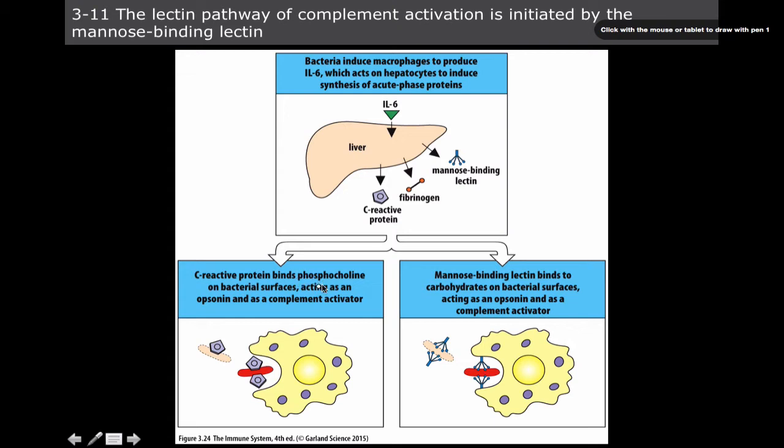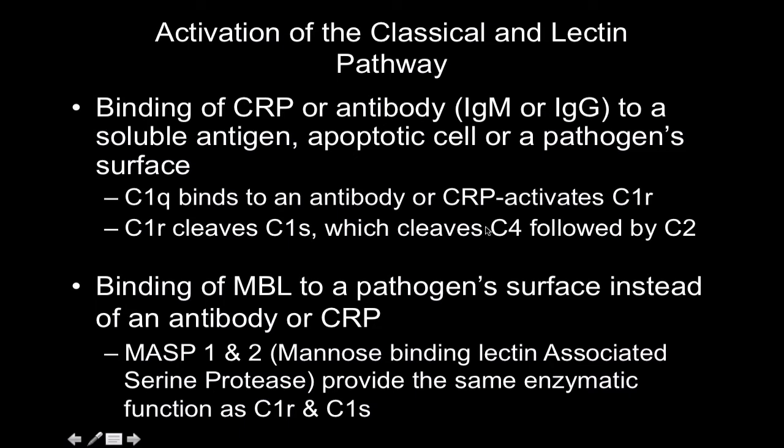So C-reactive protein binds phosphocholine on bacterial surfaces, acting as an opsonin and as a complement activator. And then watch for this here. Mannose binding lectin binds to carbohydrates, which is a different ligand on bacterial surfaces, acting as an opsonin and a complement activator. So they're both doing really similar things, right?